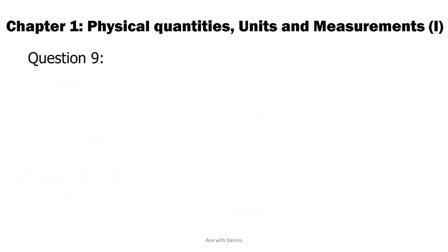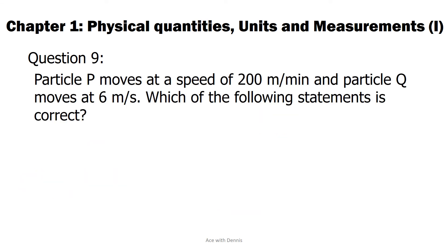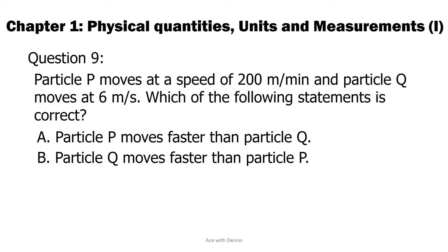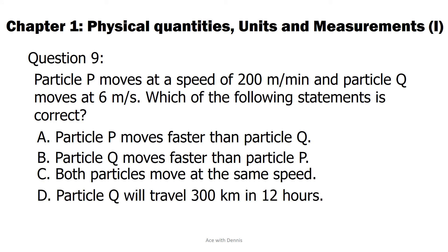Question 9: Particle P moves at a speed of 200 meters per minute and particle Q moves at 6 meters per second. Which of the following statements is correct? A. Particle P moves faster than particle Q. B. Particle Q moves faster than particle P. C. Both particles move at the same speed. D. Particle Q will travel 300 kilometers in 12 hours.